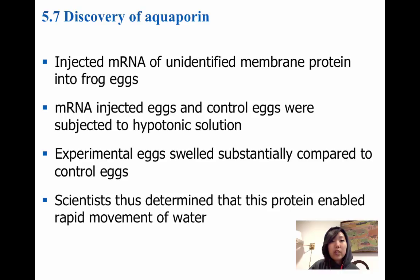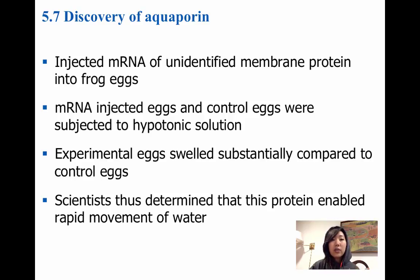If you walk through your textbook, it talks about how scientists actually took the mRNA of this unidentified protein and decided to inject it into frog cells. Frog cells are known for being very impermeable to water normally. They put in this new mRNA and found that it coded for some new protein that was present in the cell.